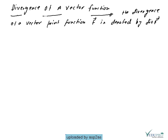The vector point function f is denoted by div f. If we have the vector point function f with value f1·i plus f2·j plus f3·k, then the divergence of the vector f is given by del·f.